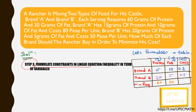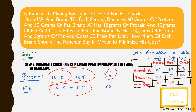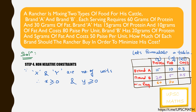Step 3 is to formulate the constraints as linear equations or inequalities in terms of the variables. We get: 15x + 20y ≥ 60 and 10x + 5y ≥ 30. Since these represent minimum requirements, the left-hand side must be greater than or equal to the right-hand side. Since x and y represent number of units, they cannot be negative, so x ≥ 0 and y ≥ 0.